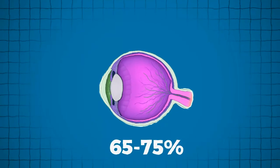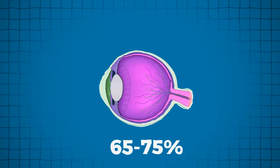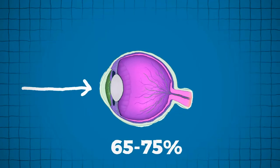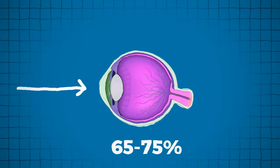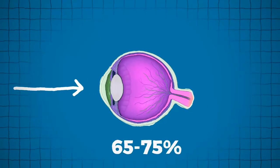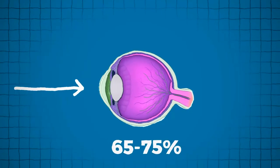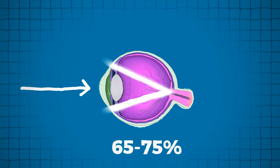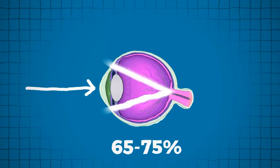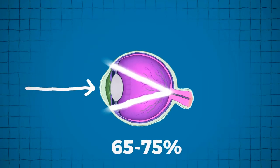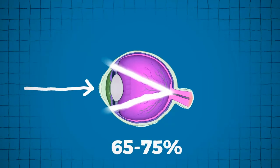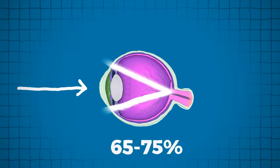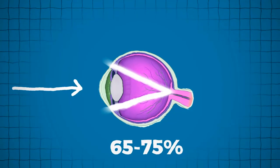The cornea contributes between 65 to 75 percent of the eye's total focusing power. When light strikes the cornea, it bends or refracts the incoming light onto the lens. The lens further refocuses that light onto the retina, a layer of light-sensing cells lining the back of the eye, which begins the translation of light into vision.